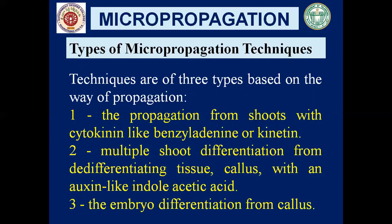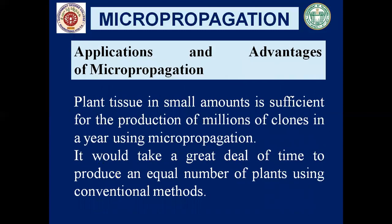Now we'll see the applications and advantages of micropropagation. First, plant tissue in small amounts is sufficient for the production of millions of clones and plantlets in a year using micropropagation. Second, it would take a great deal of time to produce an equal number of plants using conventional methods. In a short time and space, we can produce millions of clones from a small plant tissue or cell — that is why micropropagation is advantageous over conventional methods.